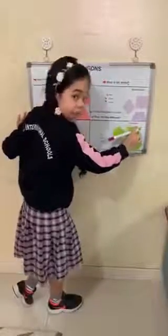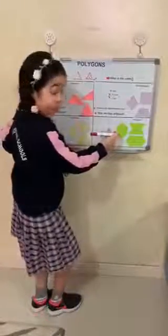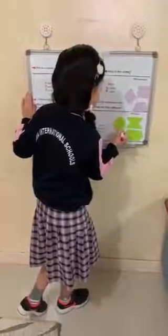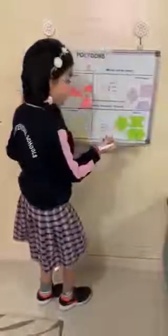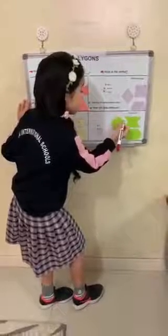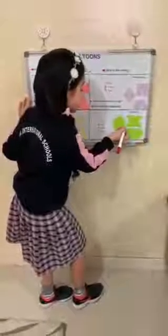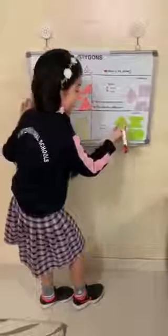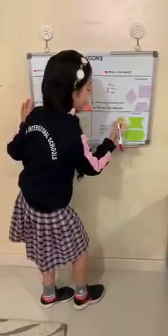Now we will start with hexagons. 'Hex' means six. So we have six sides, six vertices, and six angles. Let's count together: one, two, three, four, five, six. Let's count the vertices: one, two, three, four, five, six — correct! Let's count the angles: one, two, three, four, five, six.